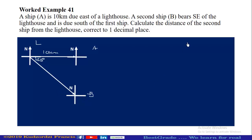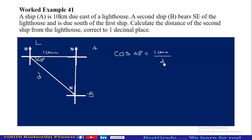We are supposed to calculate the distance of the second ship from the lighthouse, correct to one decimal place. We complete our triangle and apply trigonometry to find this distance. Let this distance be d. We know the adjacent and the hypotenuse, so we use the cosine ratio. cos 45° = 10/d, so d = 10 / cos 45°, which gives us 14.1 kilometers to one decimal place.